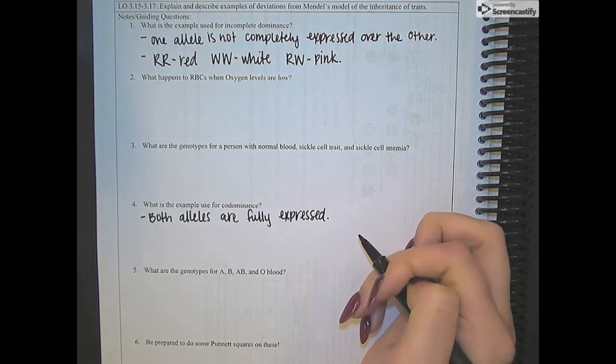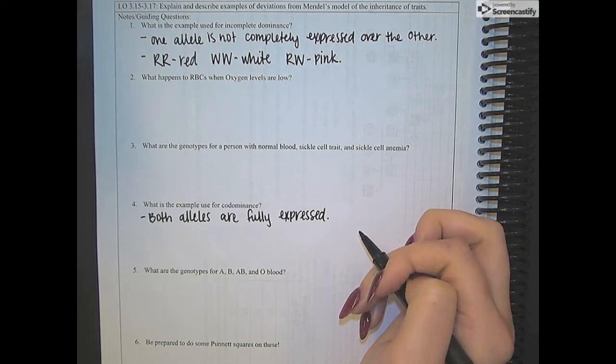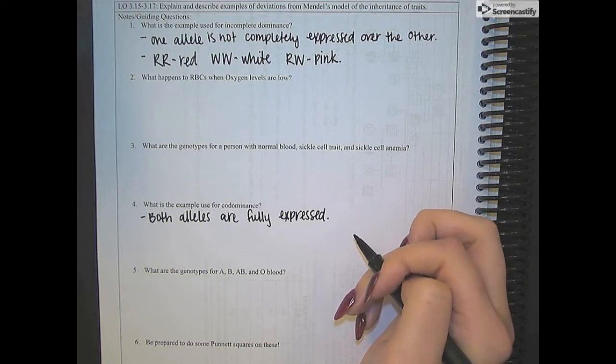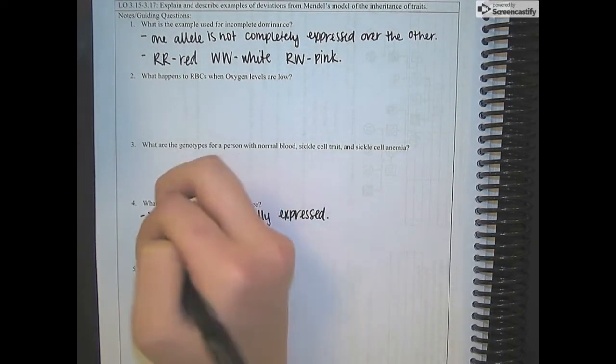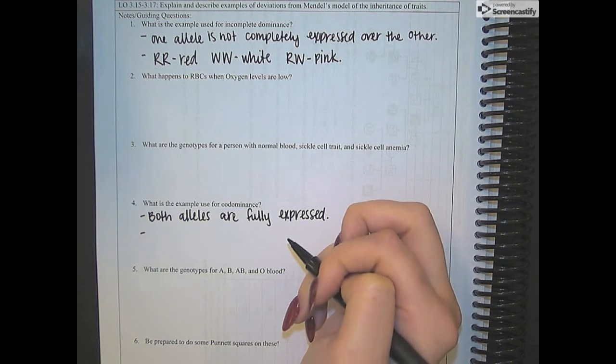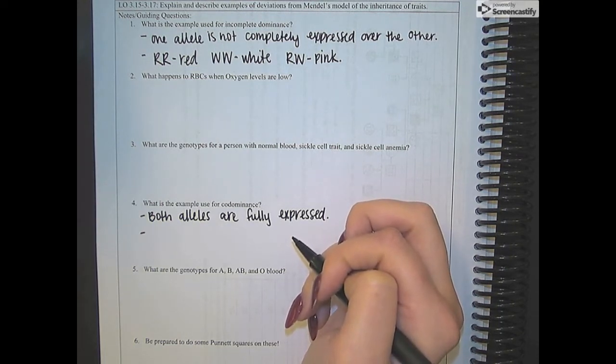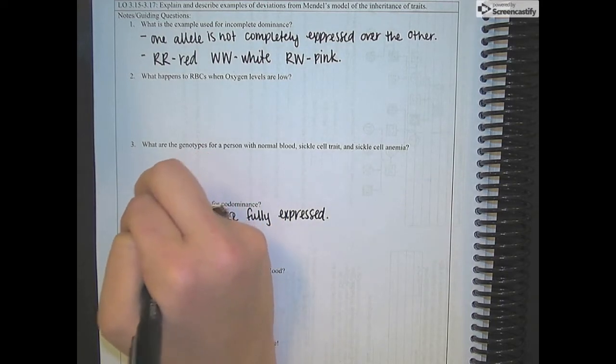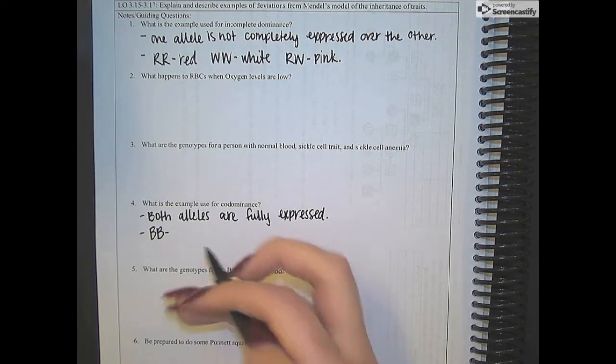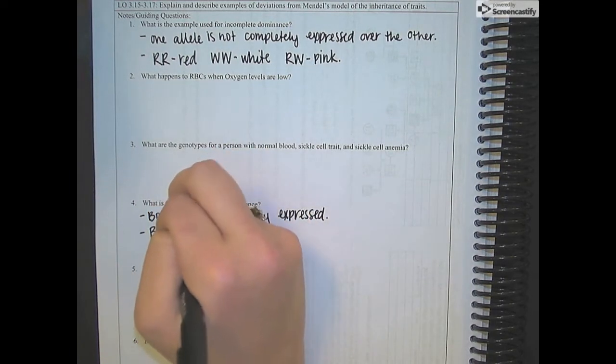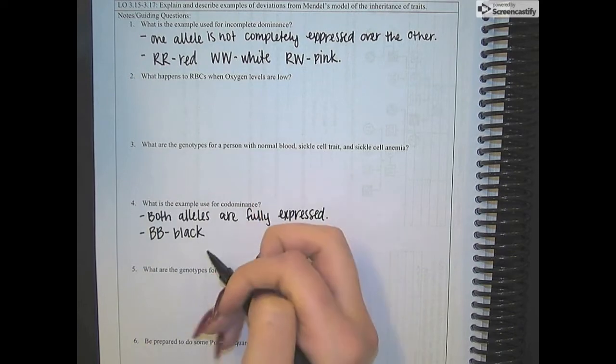So there's two examples that I want to give you guys. The first one is going to be a little easier for you guys to see and recognize, and I'll see what I can do about putting a picture on here. But I'll talk about freckled hens. So freckled hens come in three phenotypes. The first one would be if you have two black alleles, then that hen or rooster is going to be black.